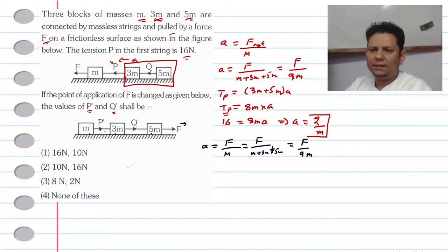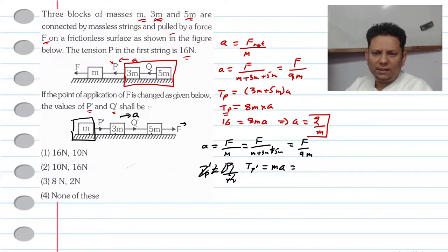But if we talk about P', then the acceleration will be the same. If we consider just the M block, the tension at P' equals M times acceleration, which we have as 2 by M, so the value of tension at P' is 2N.